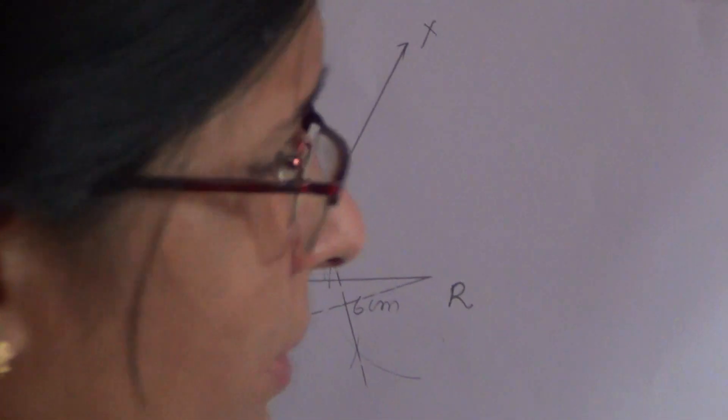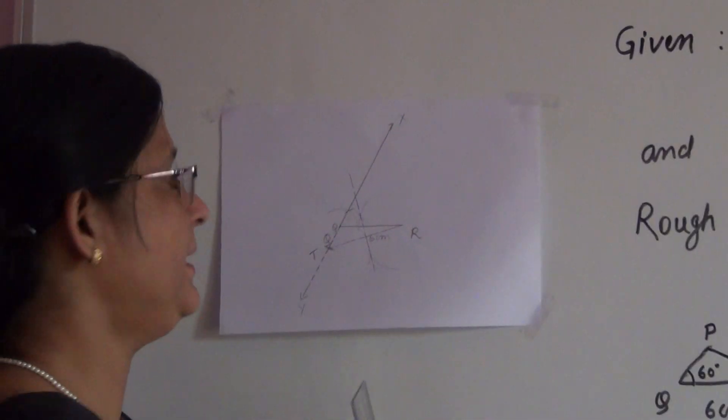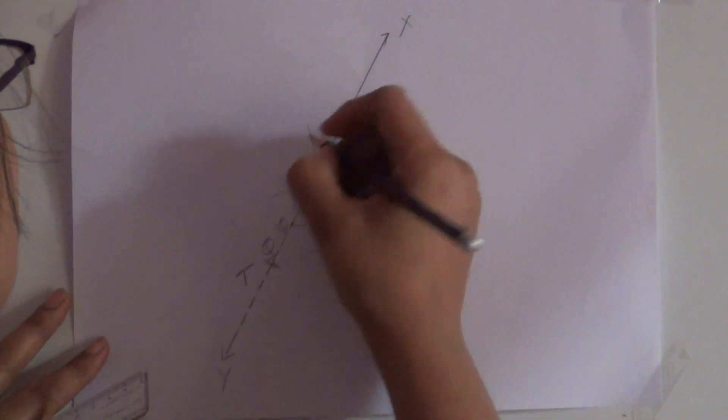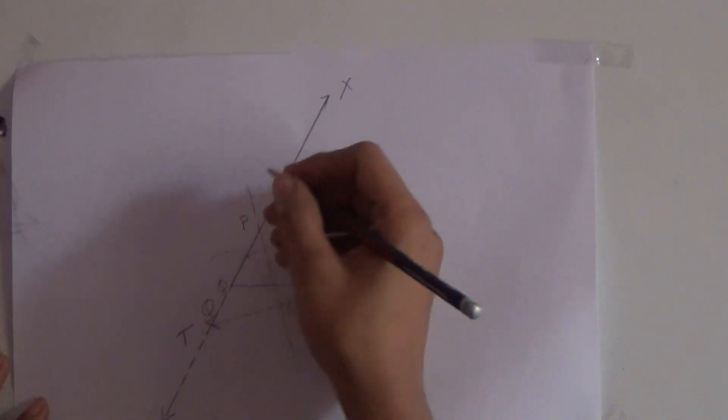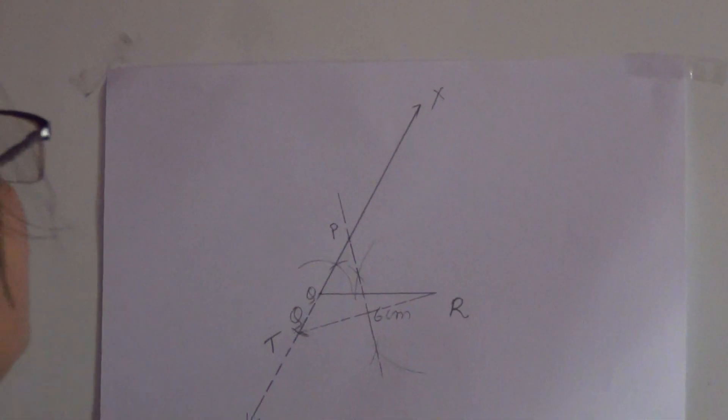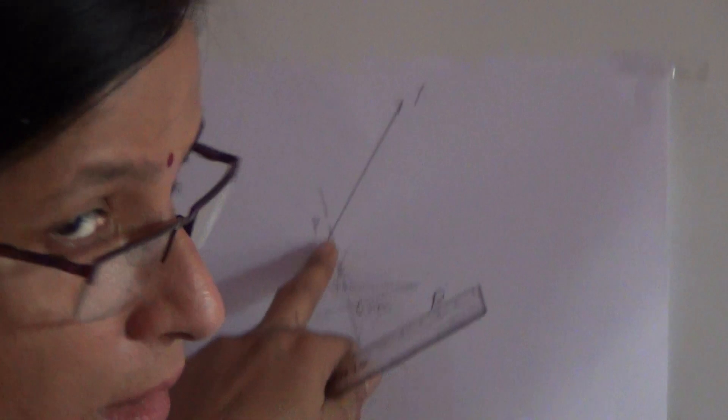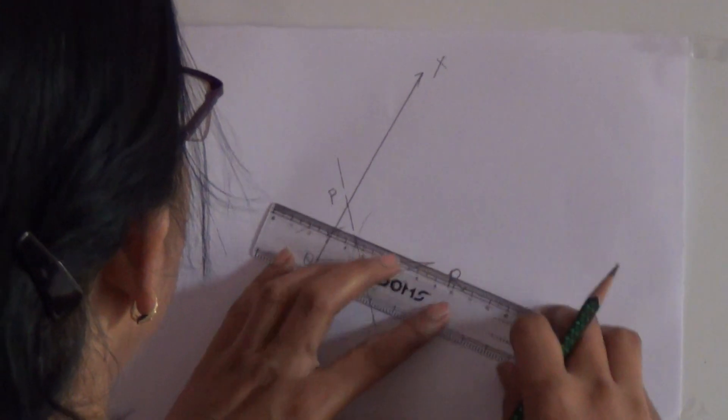Now, this perpendicular bisector, as we know earlier also, it has the point where it is intersecting the previous line or the line making an angle with the base. That is the vertex, the third vertex of the triangle. That is P.